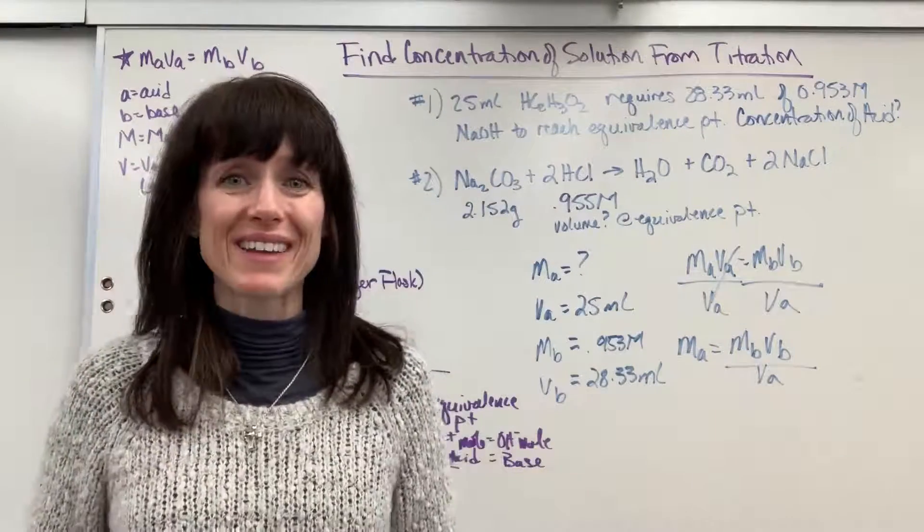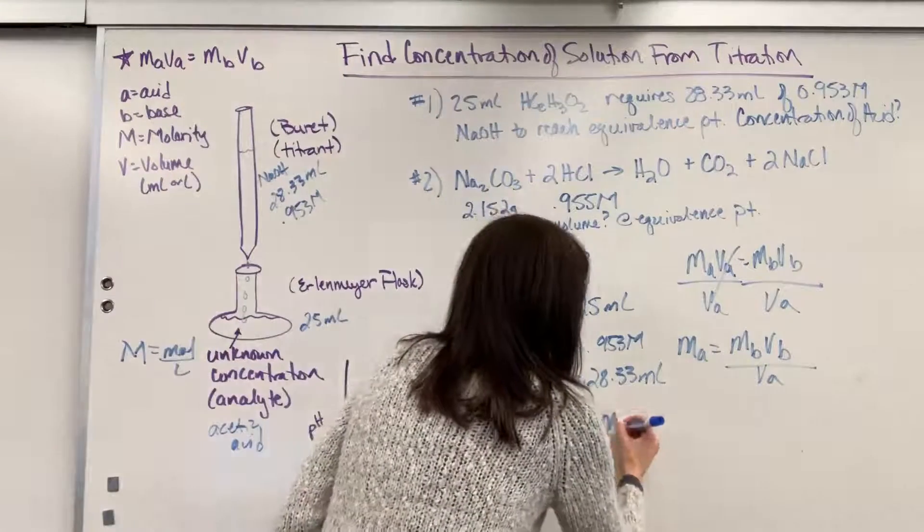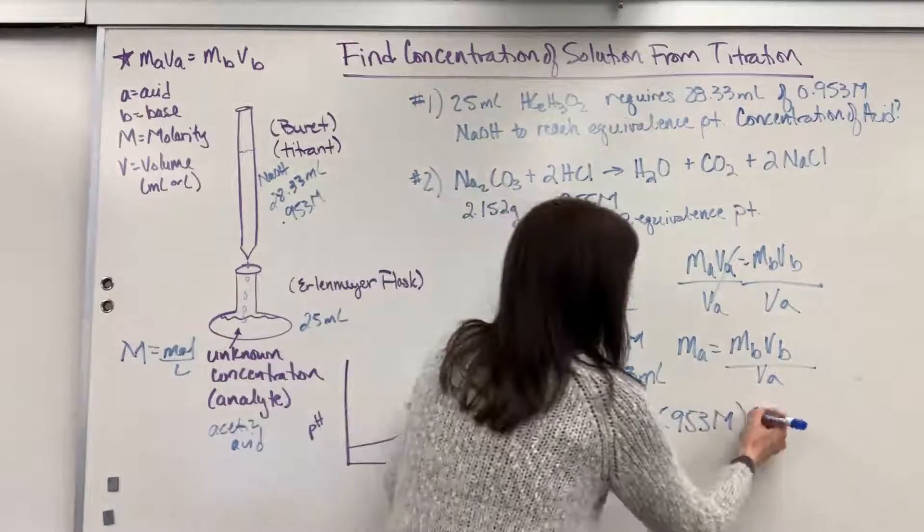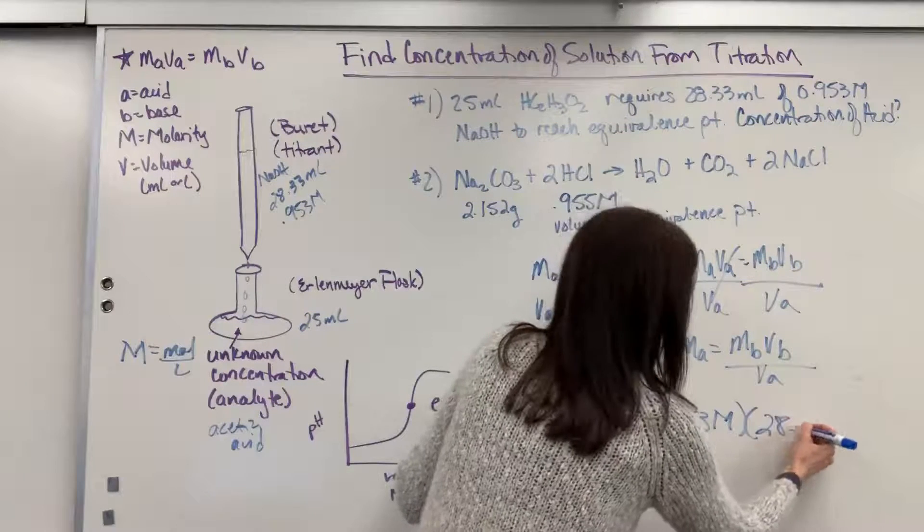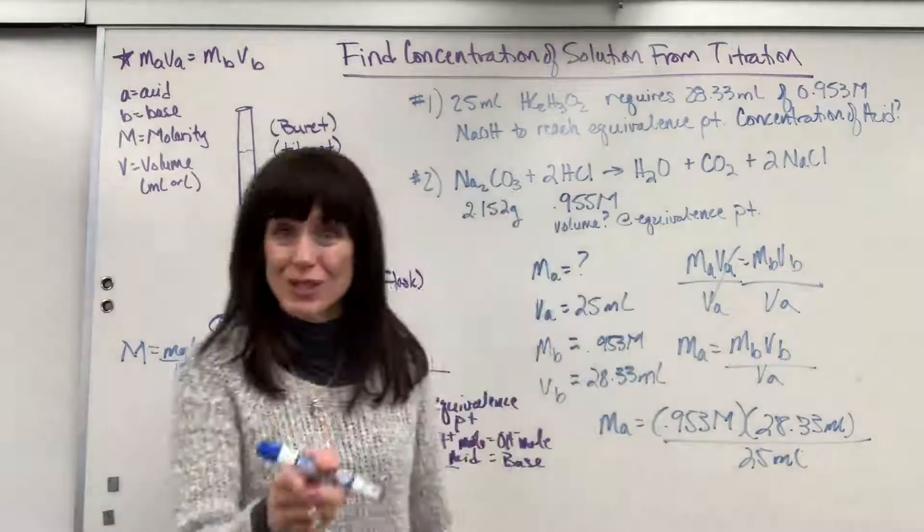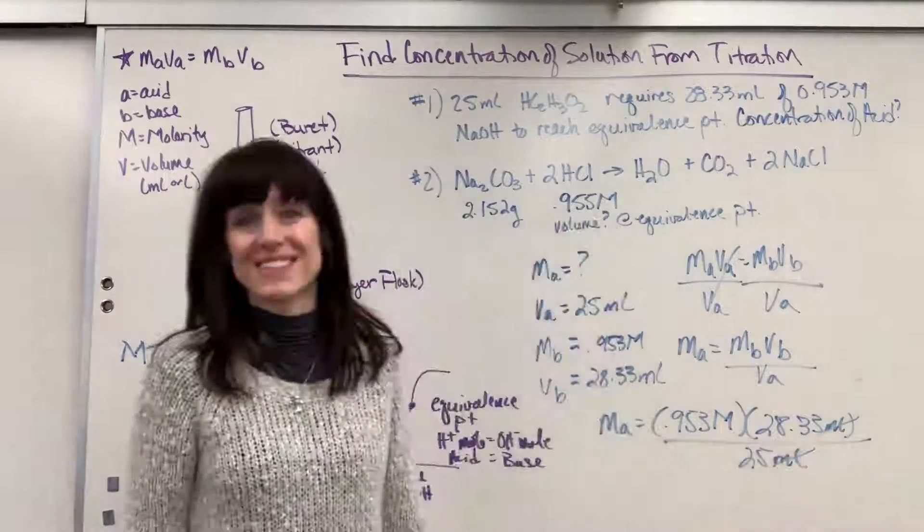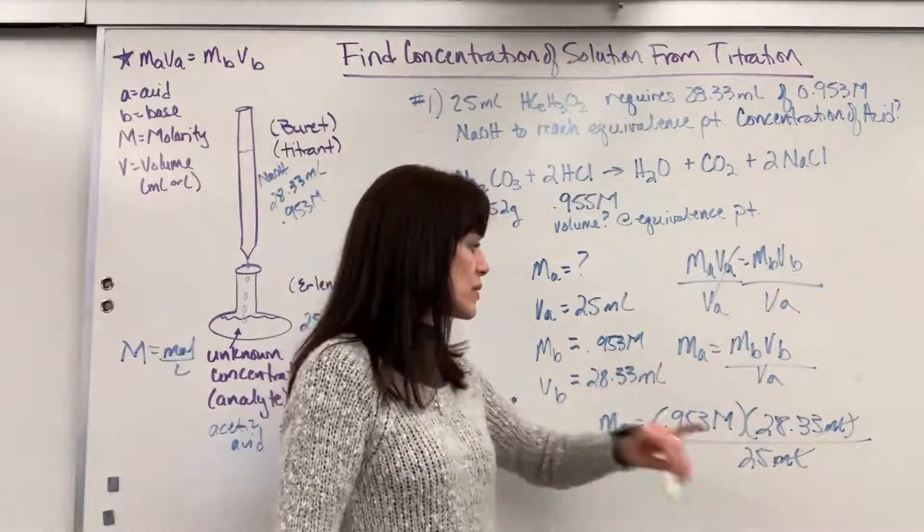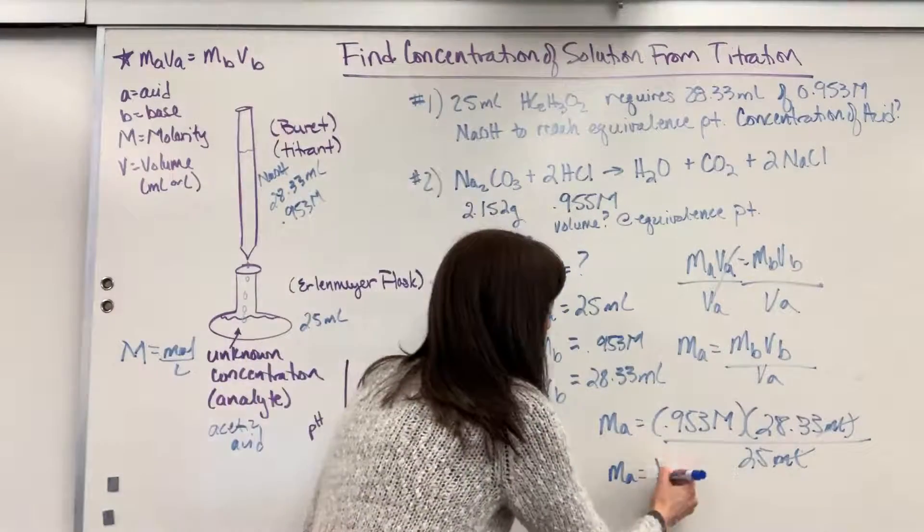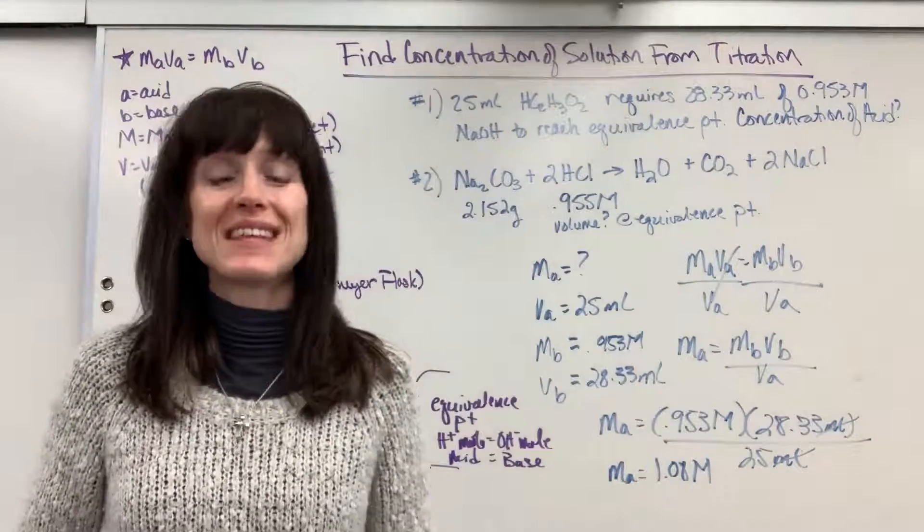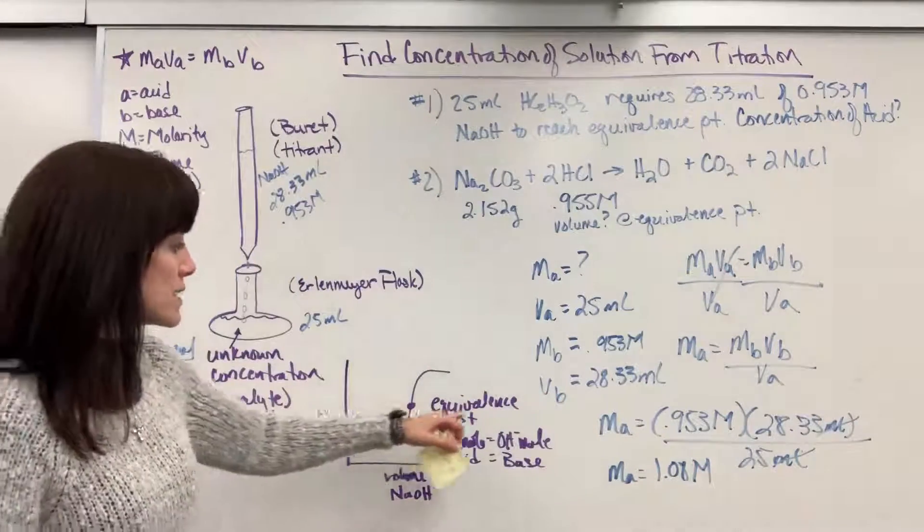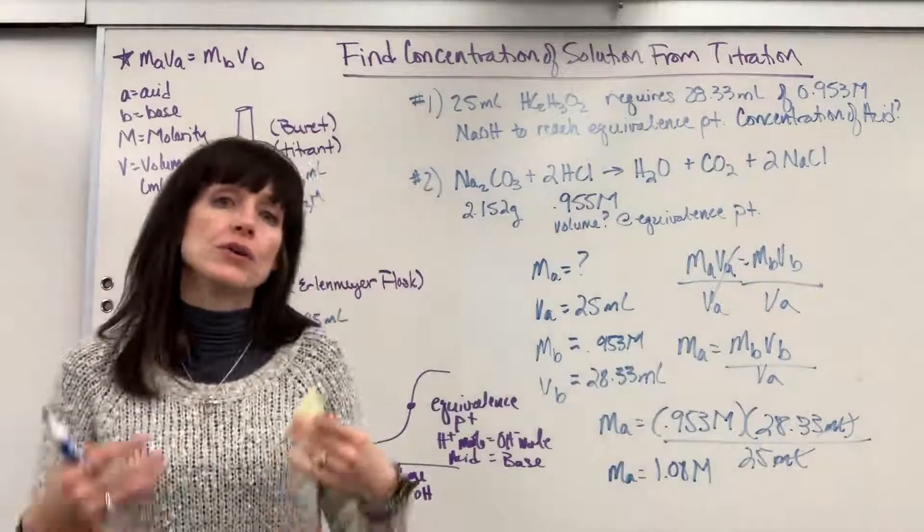So at this point, really easy - just plug in our numbers and do the calculation. So MA will be molarity of the base 0.953 - always be careful, write down those units. They also show us if we do it correctly - times the VB, which is 28.33 mils, divided by the volume of the acid is 25 mils. Now check out those units - mils cancels. So if we take 0.953 times 28.33 divided by 25 mils, I bet you already know what the answer is: 1.08 molar. Same answer. So you can use this dilution formula because the moles of the acid equals moles of the base. That's all that's saying right there. Or you can use dimensional analysis.